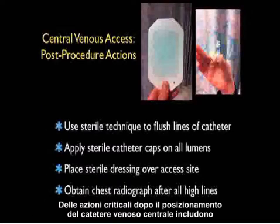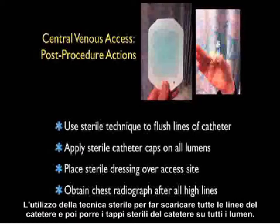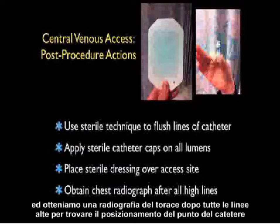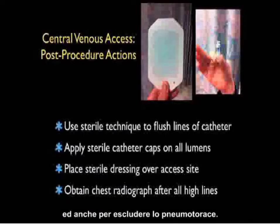Critical actions following placement of a central venous catheter include using sterile technique to flush all lines and then placing sterile catheter caps on all lumens. A sterile dressing such as a Tegaderm should be placed over the access site, and a chest radiograph should be obtained after all high-line placements to confirm catheter tip position and to rule out pneumothorax.